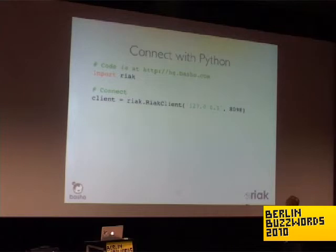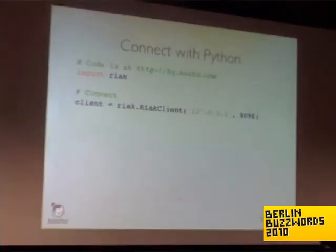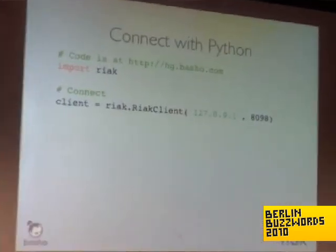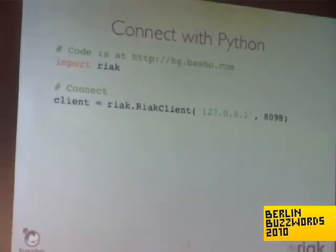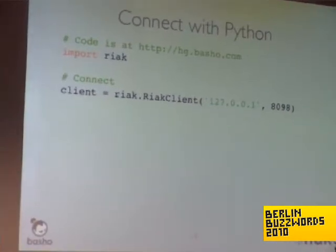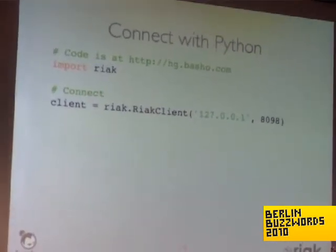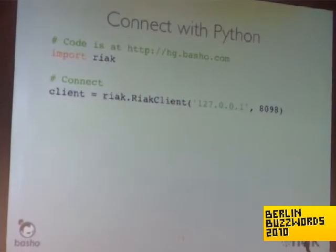To connect with Python — the Python library is at hg.basho.com, where all the different client libraries can be found. You import the Riak library, then create a client object by calling riak.RiakClient and passing in the hostname and port.